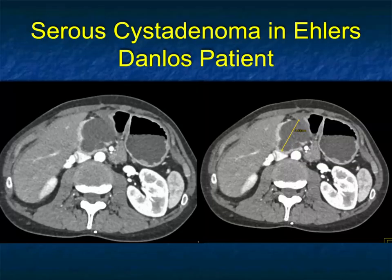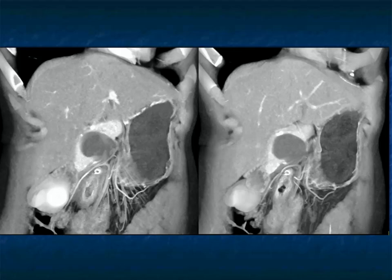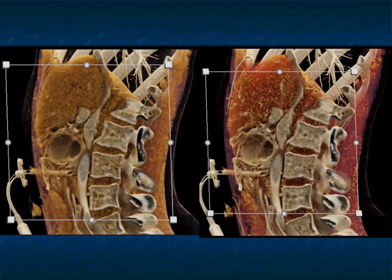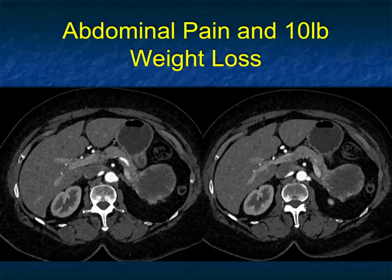Another case — this patient had Ehlers-Danlos disease. There's no increased incidence of cystic pancreatic lesions. Ehlers-Danlos disease gives you aneurysms and pseudoaneurysms of multiple vessels, but here's a cystic lesion in the pancreatic head. Thin septations, nicely showing mass effect and displacing portions of the normal gland, but no increased enhancement. Very nicely shown on the cinematic coronal and sagittal views. This is a good example of oligocystic serous cystadenoma.